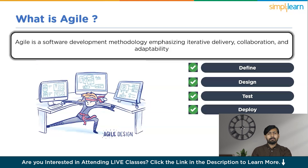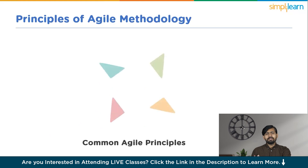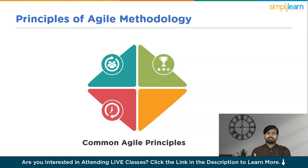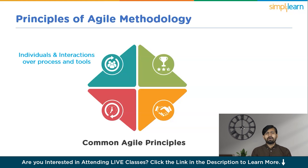Let's discuss some of the core principles of Agile methodology. At its core, Agile methodology is guided by a set of principles outlined in the Agile Manifesto, a foundational document created by a group of software developers in 2001. These principles include: first, individuals and interactions over processes and tools. Agile places a strong emphasis on the human aspect of software development, prioritizing effective communication, collaboration and teamwork within the development team.